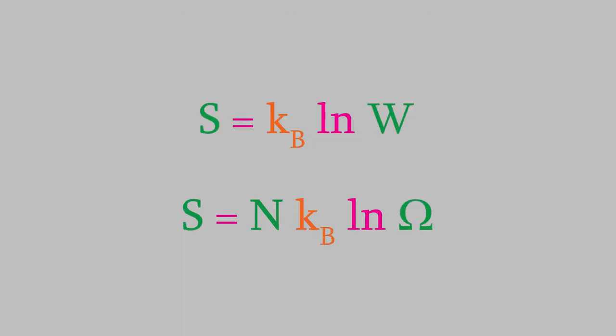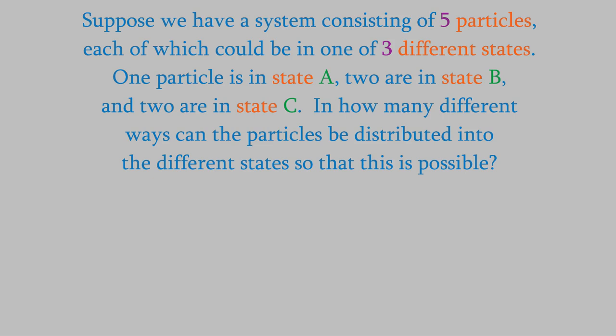So, now we have two different equations for the entropy. Let's try a few examples to see when each of these two equations is used. Just as before, suppose we have five particles, each of which can be in three different states.